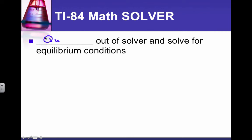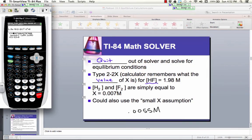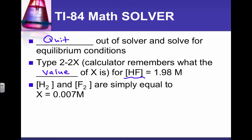So first we quit out of the solver and solve for the equilibrium conditions. So remember, HF, our concentration of HF, we said would be 2 minus 2X. The calculator will remember what the value of X is. So you don't have to type in the number that we got. You just type in 2 minus 2X. So quit out of the solver. Then we type in 2 minus 2. Then go get your variable X. Push enter. And there's your concentration of HF, 1.98 molar. Then the value of H2 and F2 were simply X. So that's the .007 molar that our calculator solved for.